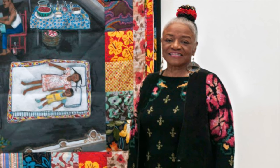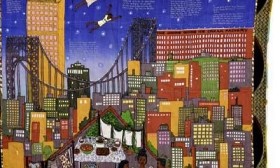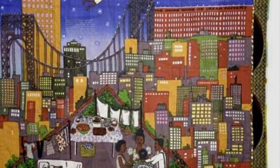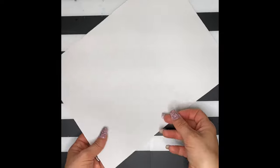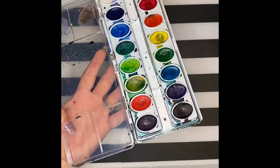Today you will create your own one-point perspective cityscape inspired by her. You will need white paper, pencil, watercolors, paintbrush, cup of water, markers, crayons, and print out the one-point perspective directions from Schoology.